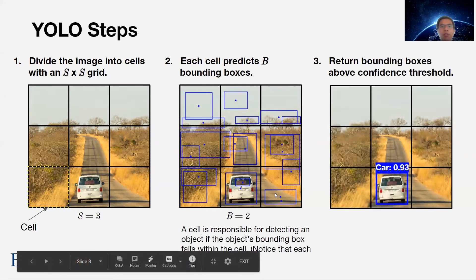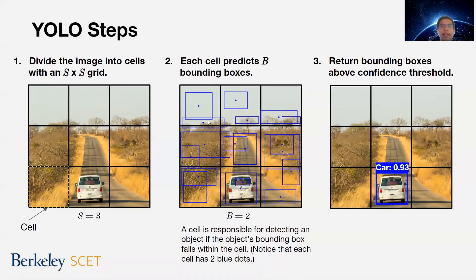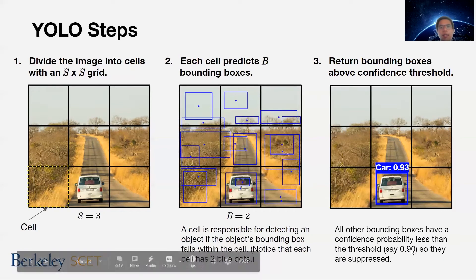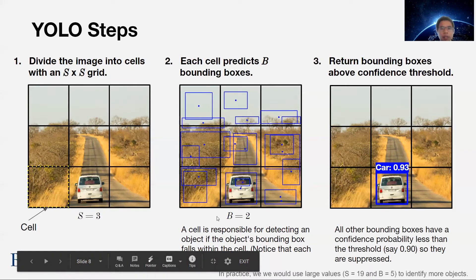There will be many bounding boxes that don't contain anything, so we set a confidence threshold. Anything below the threshold gets removed, and we return only boxes above it. In this case, the threshold was something like 90%. As a side note, S was a small number of 3 here, but in practice we'd use a larger number and set B to a larger number as well, allowing us to predict way more objects in the image.